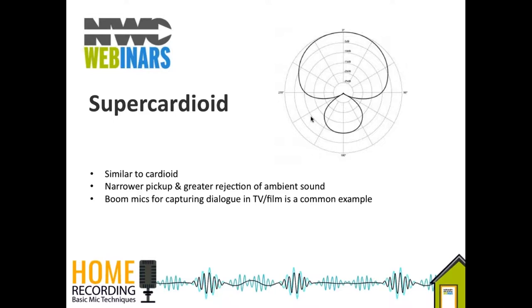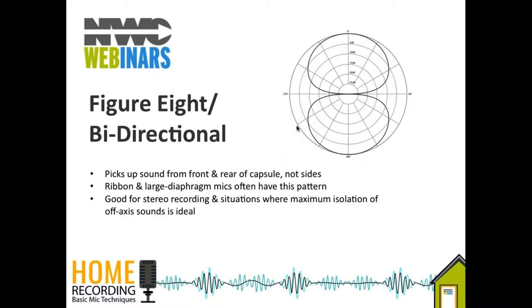Using a boom on set you get the sound of the room as well as the dialogue, setting the stage for the space the characters are in. Dialogue editors like this sound versus lapel or hidden mics. A shotgun microphone, if folks are familiar with that term, would essentially be a supercardioid or hypercardioid pickup pattern.